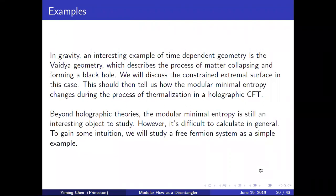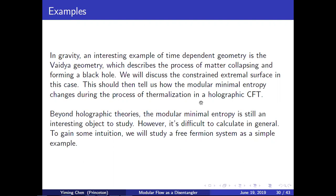We are now ready to answer the question raised in the motivation: when γ_A and γ_R can be put in the same Cauchy slice, the constrained extremal surface equals the extremal surface. By this inequality on the boundary, S_A must equal the modular minimal entropy. This serves as the boundary signal that γ_A and γ_R can be put in the same slice. If the modular minimal entropy is smaller than the entanglement entropy, then γ_A and γ_R cannot be put in the same Cauchy slice.